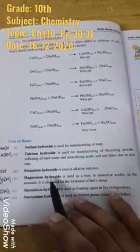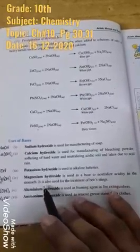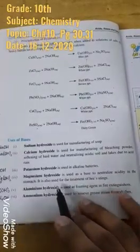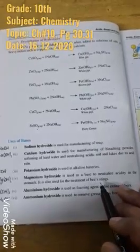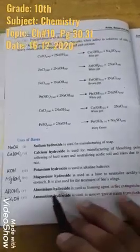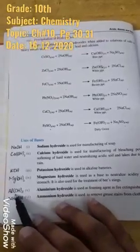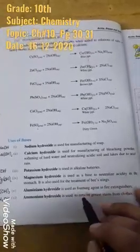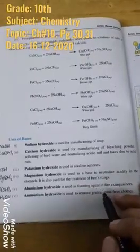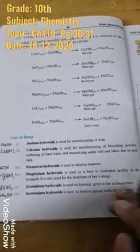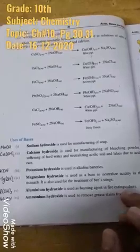Calcium hydroxide is used as a base to neutralize acidity. Aluminum hydroxide is used as a foaming agent in fire extinguishers.